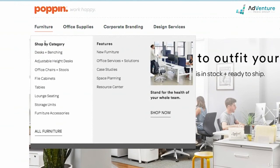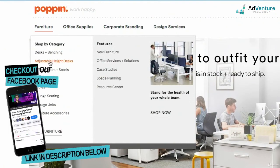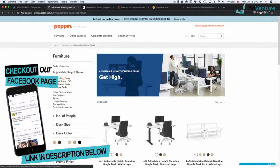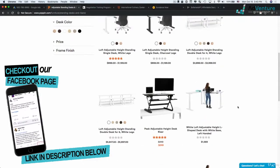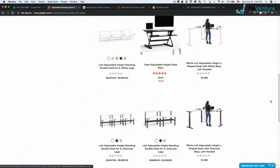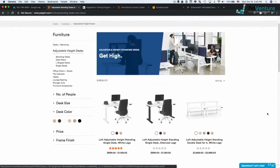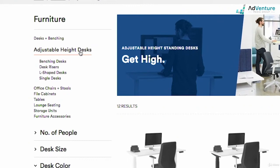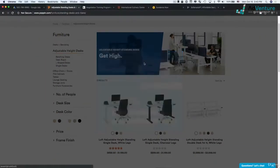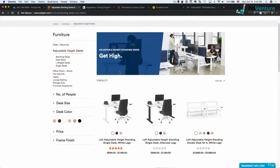My ad groups would then potentially be the subcategories of that primary navigation. Under my furniture campaign, I might have an ad group for desks and benching, an ad group for adjustable height desks. And if I click into adjustable height desks in my ad group, I'll see that I have these products and product pages. You want to also think about what page you want to send that traffic to. You don't want to be too broad and you don't want to be too specific. If I have adjustable height desks and somebody's searching for adjustable height desks or standing desks, I think that this page that we're on now would be a good place to send that traffic.